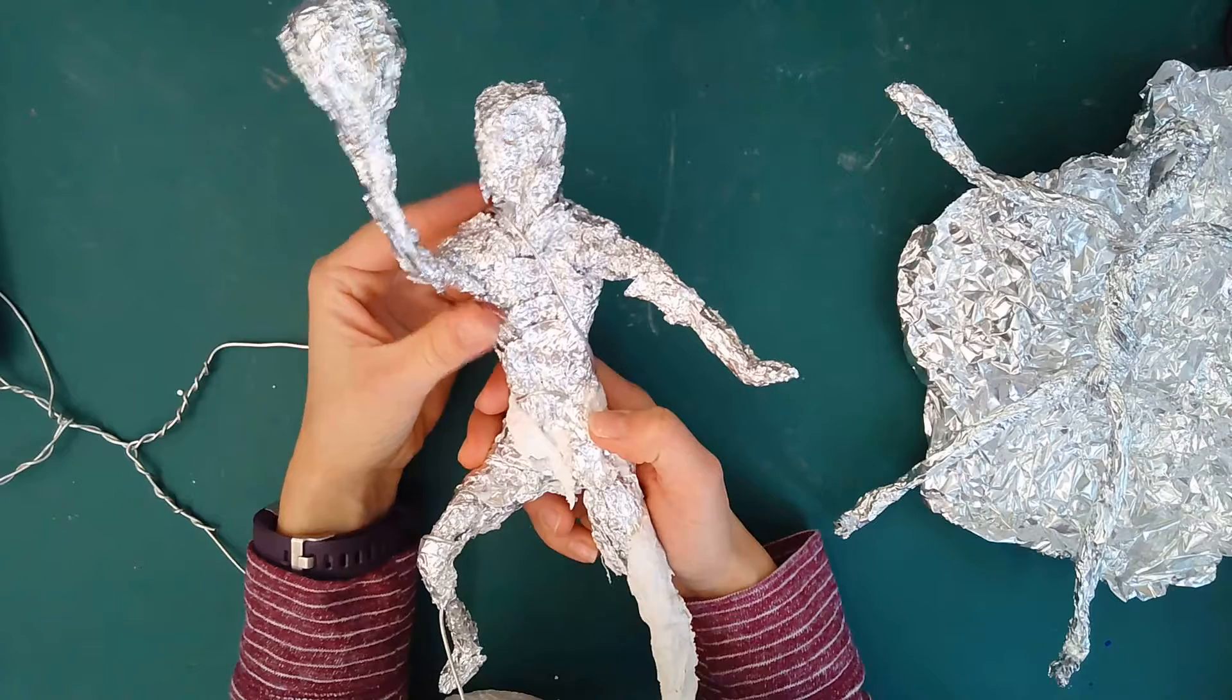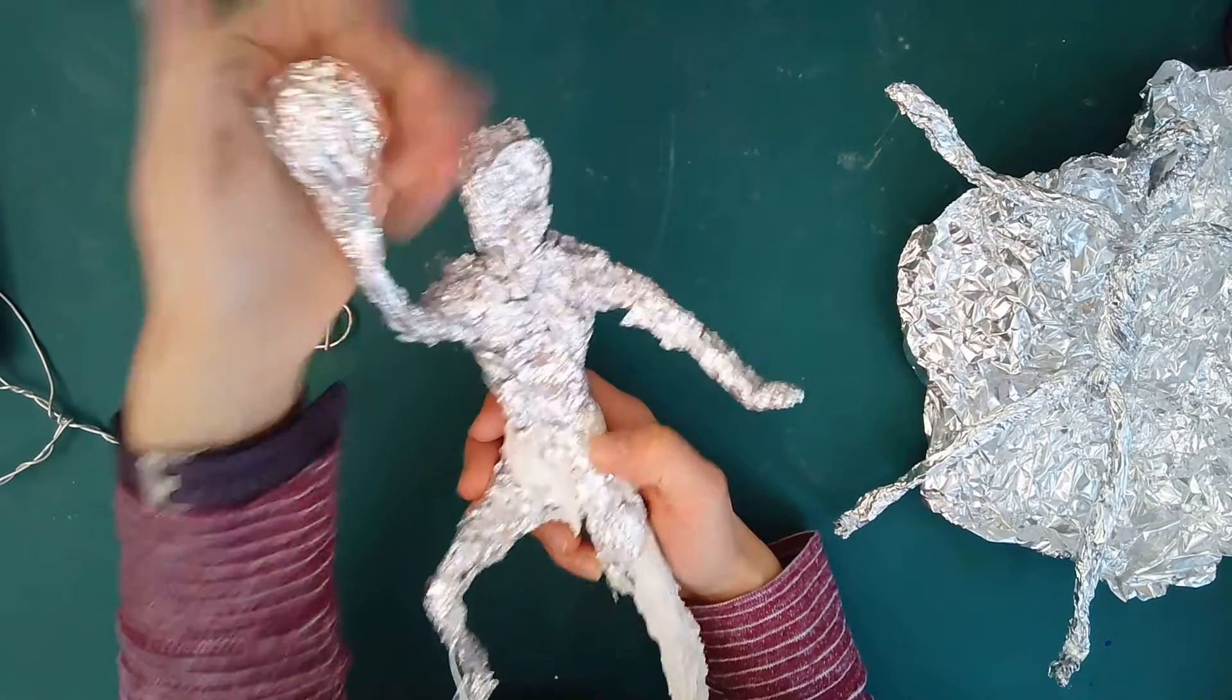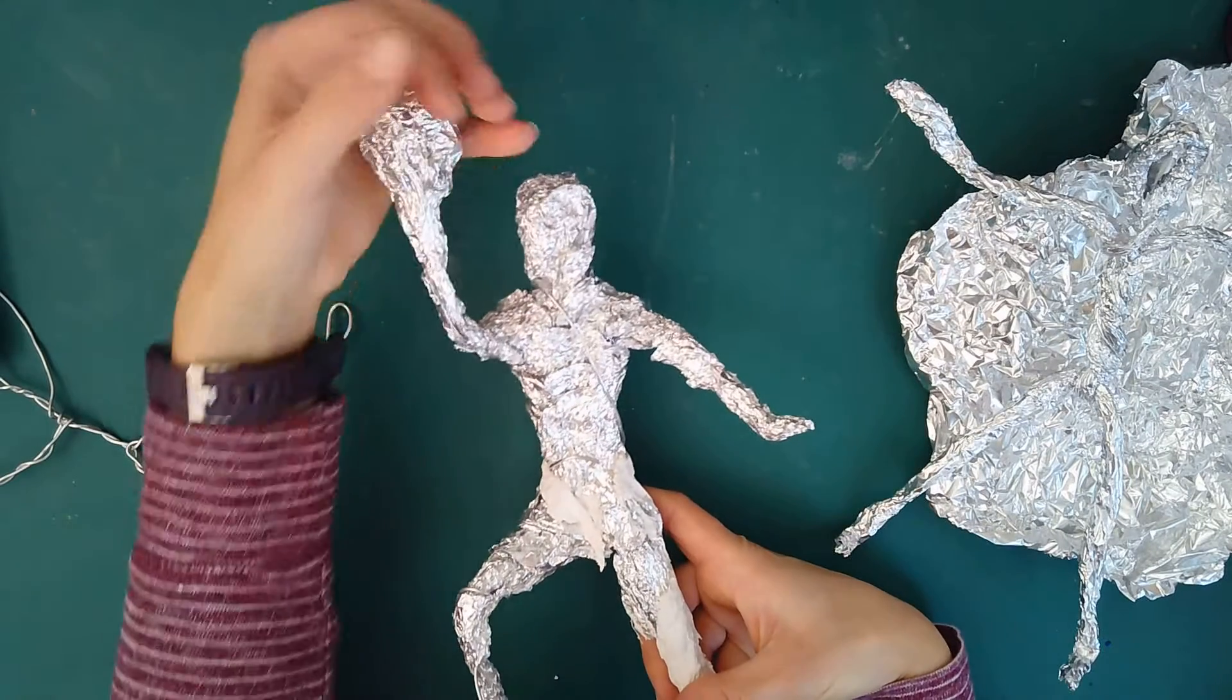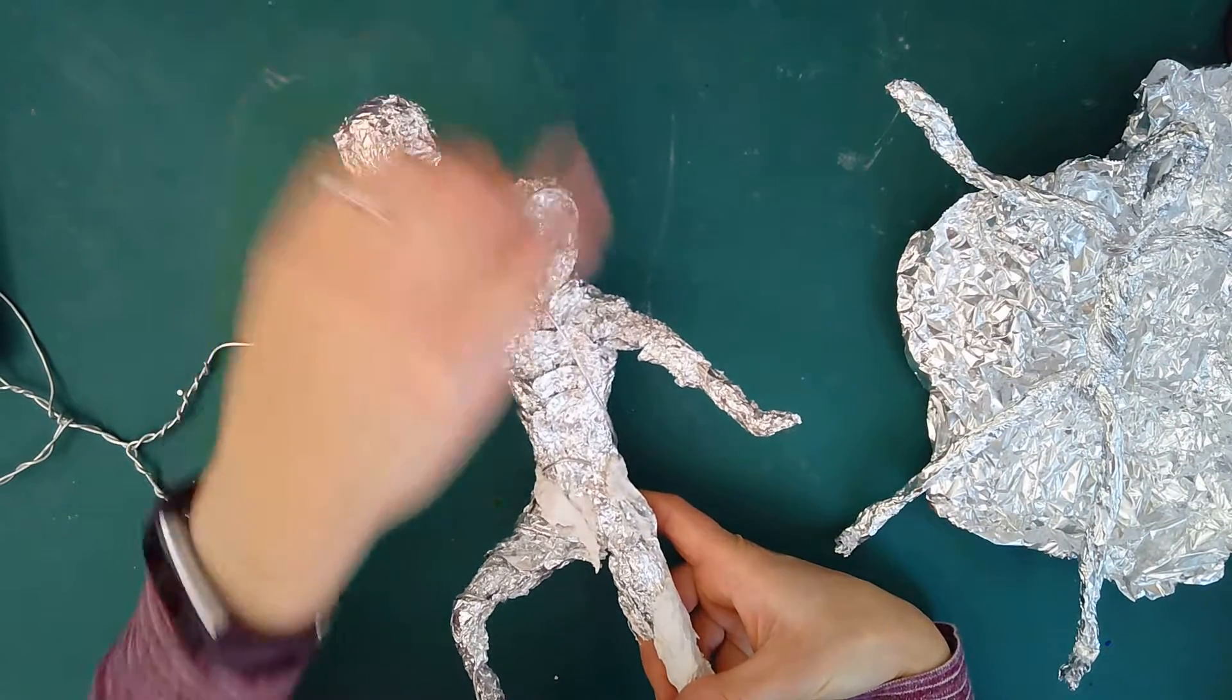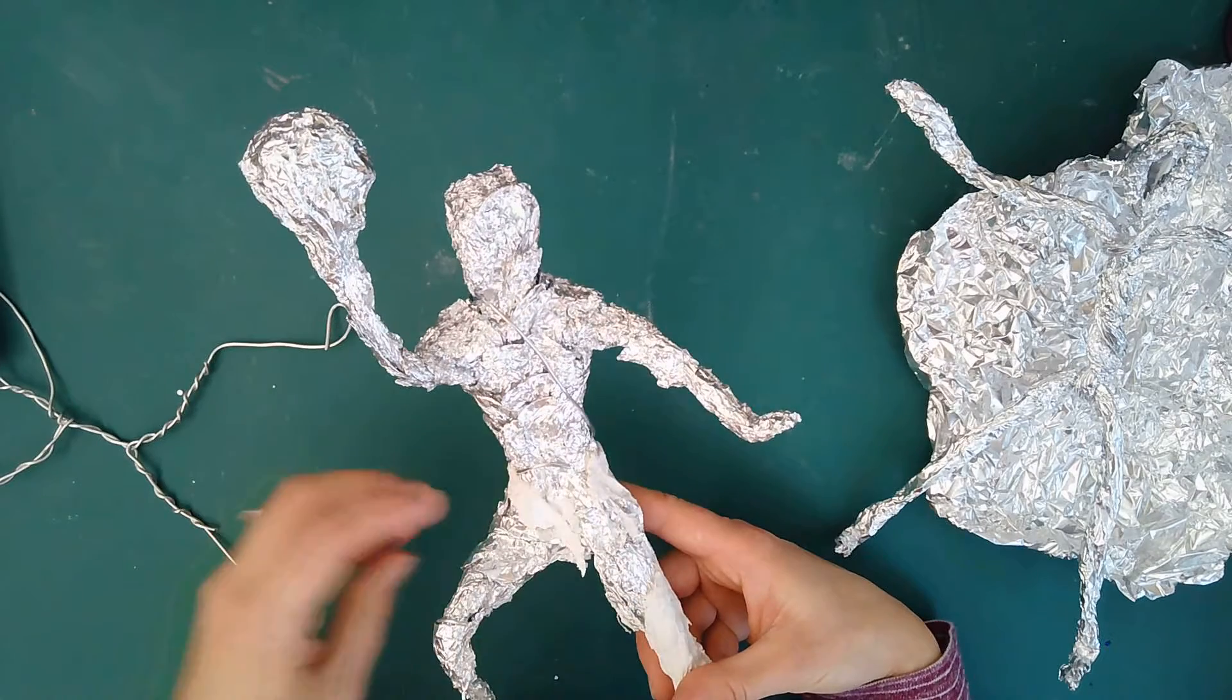For instance, here I made the chest and torso thicker. I added a bunch of foil to make the head more rounded. This is going to be a basketball player going up for a slam dunk, so I added a bunch of foil around this. I added in his arm to give more definition to the hand.